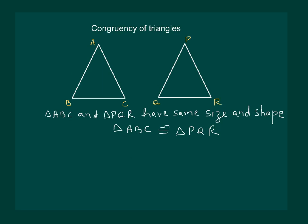This means that when we place triangle PQR on ABC, P falls on A, Q falls on B, and R falls on C. Also PQ falls on AB, PR falls on AC, and QR falls on BC.